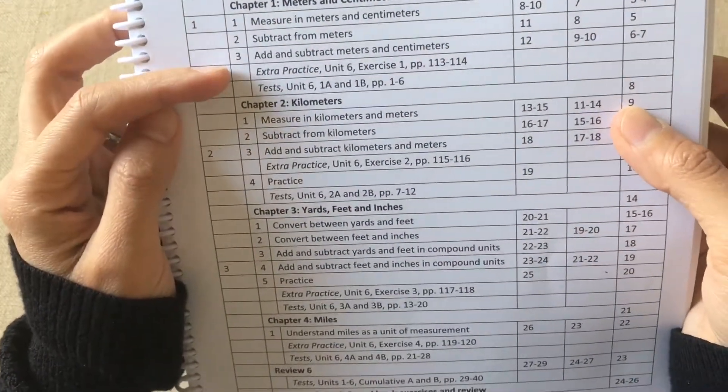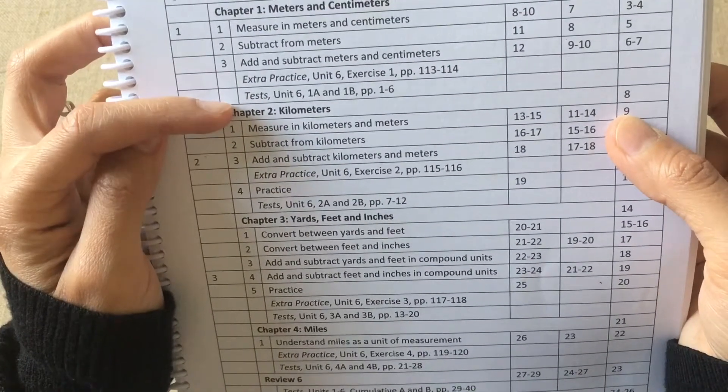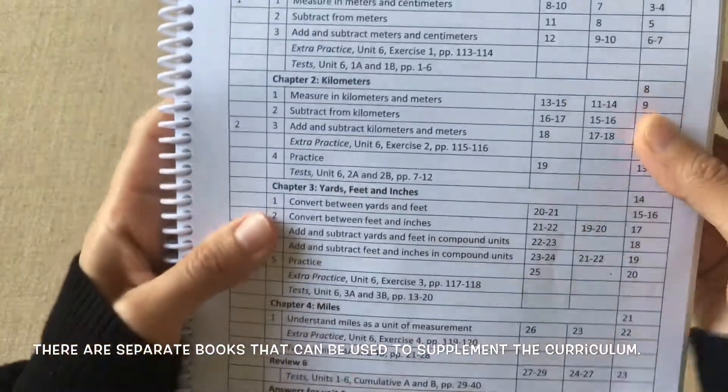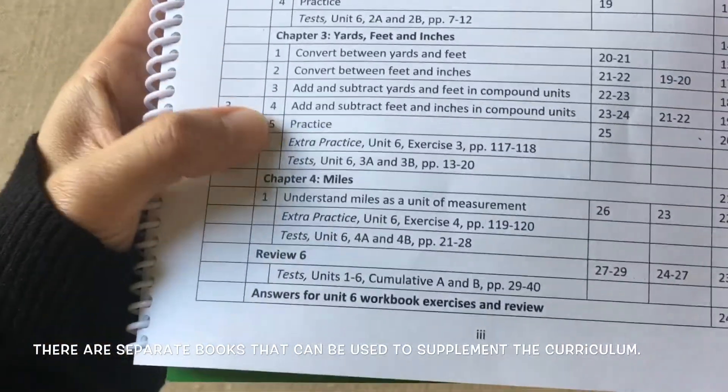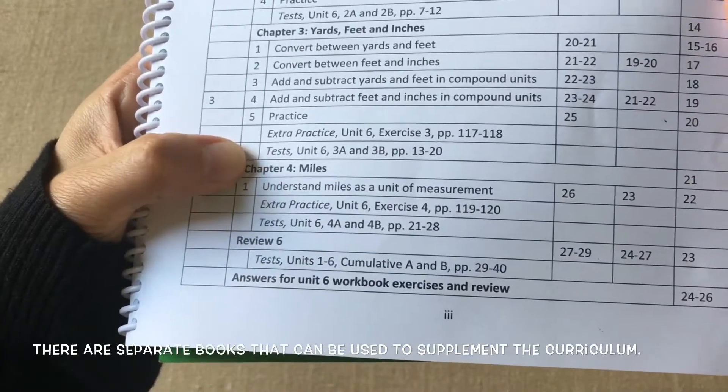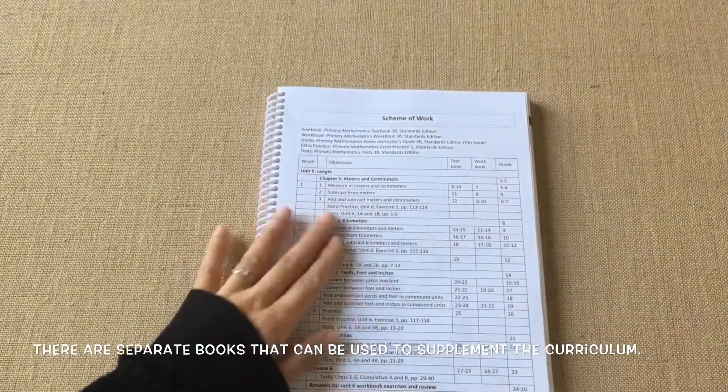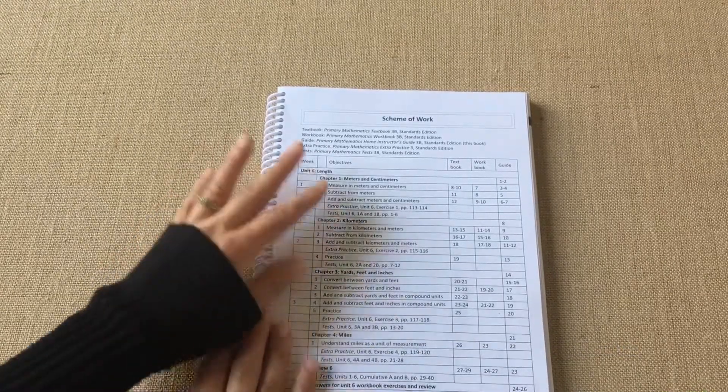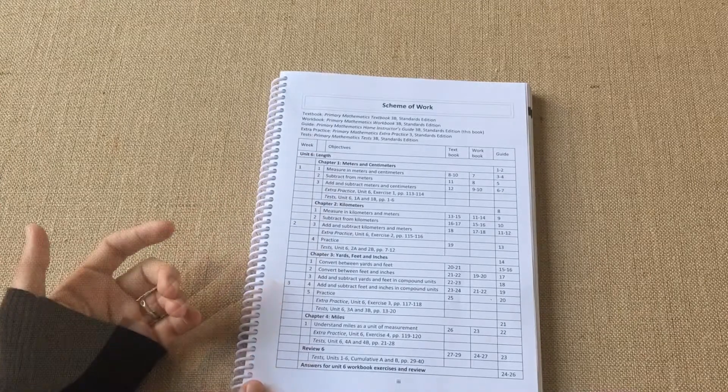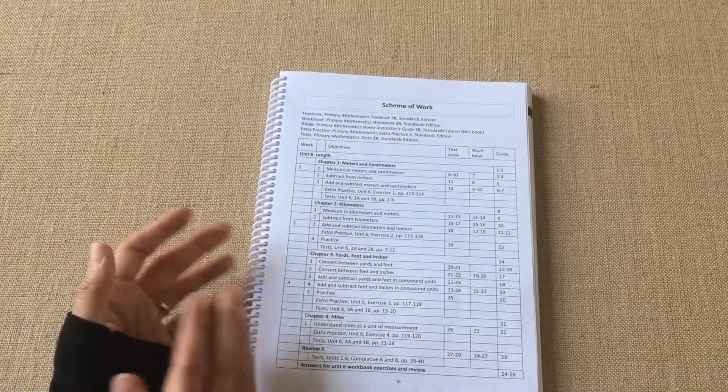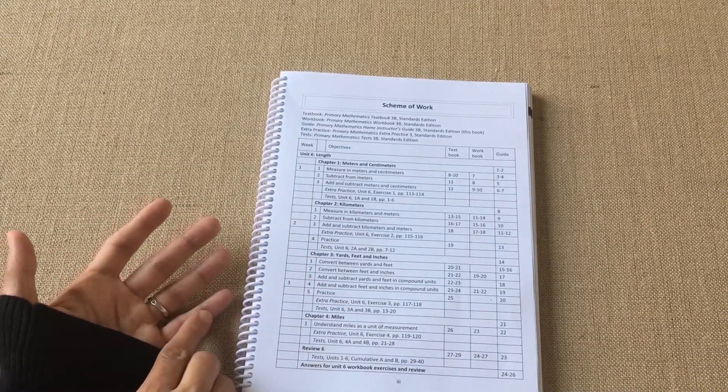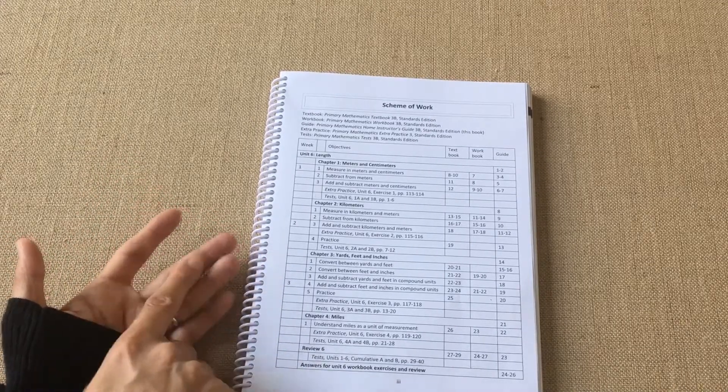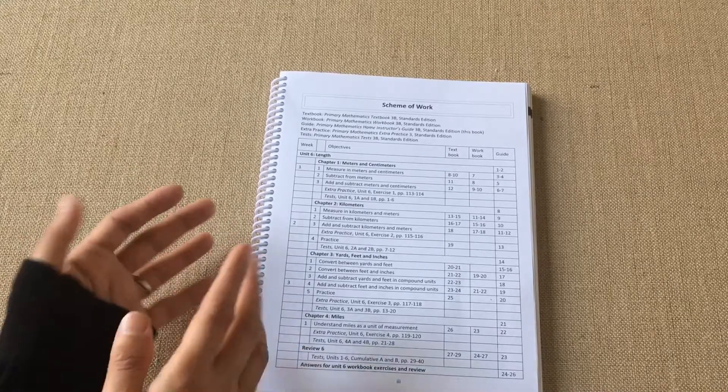After the sub-chapters are over, there's extra practice and tests. These are actually supplemental books you can buy in addition to the textbook and workbook. Wherever you see extra practice or tests, that's an additional resource you can use to supplement this curriculum. I think with every edition there's a different set of books.